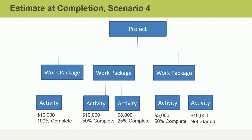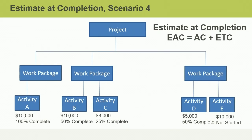You may pause the video at any time to determine the answer, then resume when you're ready. If you said we should consider our actual costs so far and then add the estimated cost for the remaining activities, you would be right. For this scenario, the correct formula for the EAC is to take the actual cost and add the estimate to complete for the remaining activities. If an activity is in progress, you would count both the actual cost for work completed so far and the estimate to complete that activity.